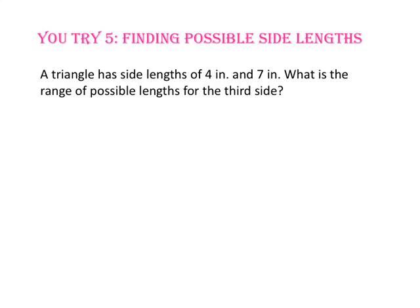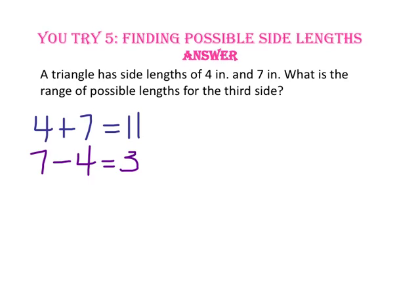Pause the video and do you-try number 5. A triangle has side lengths of 4 inches and 7 inches. What is the range of possible lengths for the third side? To find the high end, add 4 plus 7 to get 11. To find the low end, subtract 4 from 7 to get 3. So x must be greater than 3 but less than 11: 3 is less than x, but x is less than 11.